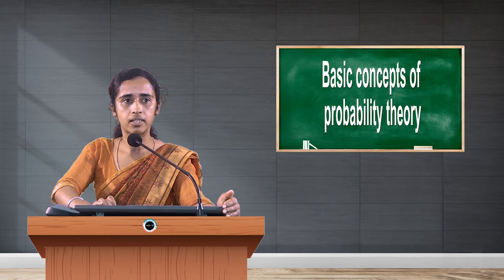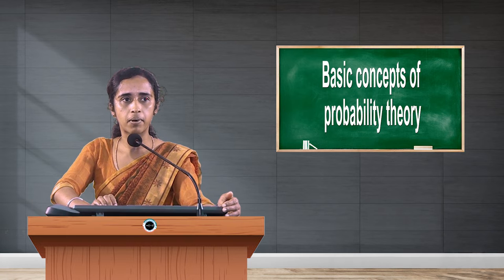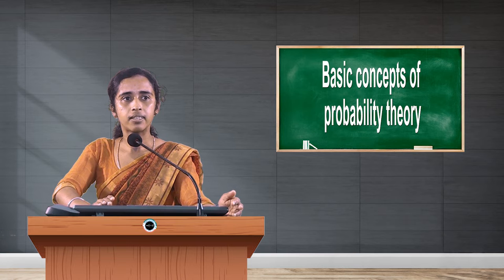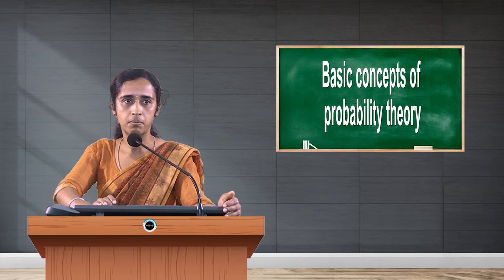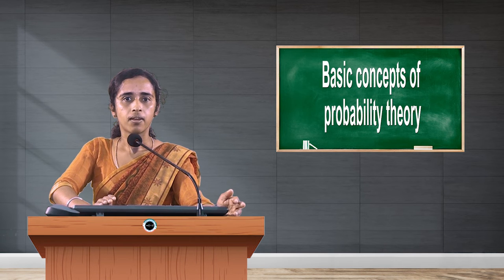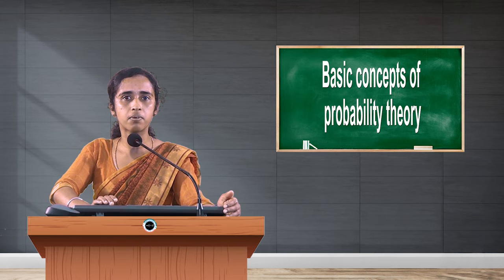Before going to probability theory, we have to see some basic concepts and definitions which support probability theory. The first thing to learn in probability theory is the experiment. Probability theory is based on the random experiment. An experiment is a collection of all possible outcomes. For example, consider tossing a coin — we know that by tossing a coin there are two outcomes: head and tail.